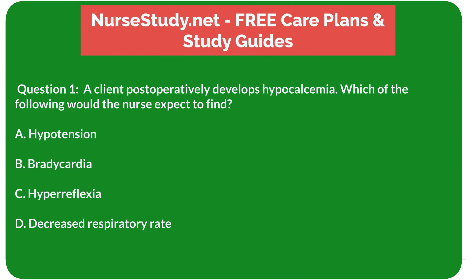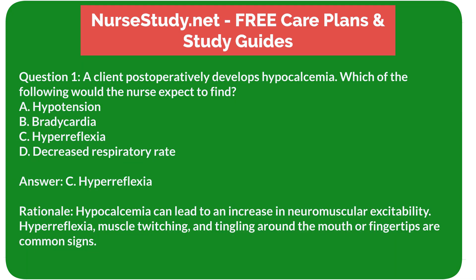Question 1: A client postoperatively develops hypocalcemia. Which of the following would the nurse expect to find? A) Hypotension, B) Bradycardia, C) Hyperreflexia, D) Decreased respiratory rate. Answer: C, Hyperreflexia. Rationale: Hypocalcemia can lead to an increase in neuromuscular excitability. Hyperreflexia, muscle twitching, and tingling around the mouth or fingertips are common signs.